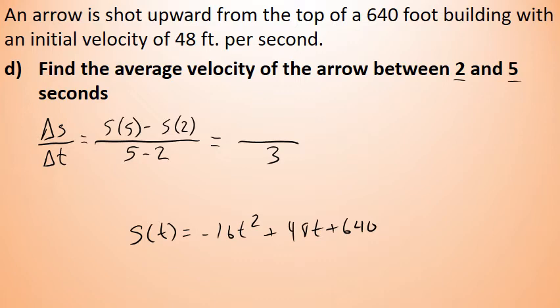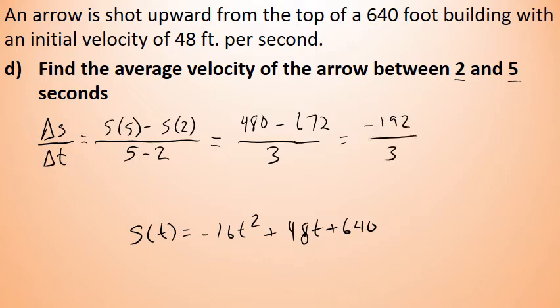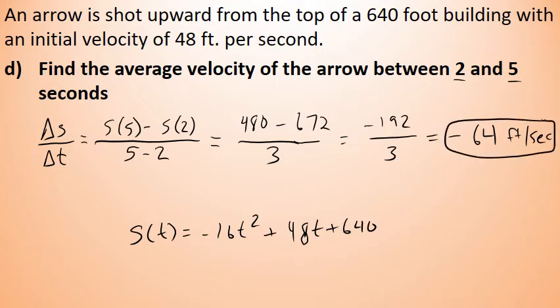s(5) equals negative 16 times 5 squared plus 48 times 5 plus 640, which equals 480. s(2) equals negative 16 times 2 squared plus 48 times 2 plus 640, which equals 672. The difference is 480 minus 672, which is negative 192. Divided by three seconds, that gives negative 64 feet per second. The average velocity between two and five seconds is negative 64 feet per second. The arrow will pass through that velocity at least for an instant during that interval, but it is only the average.